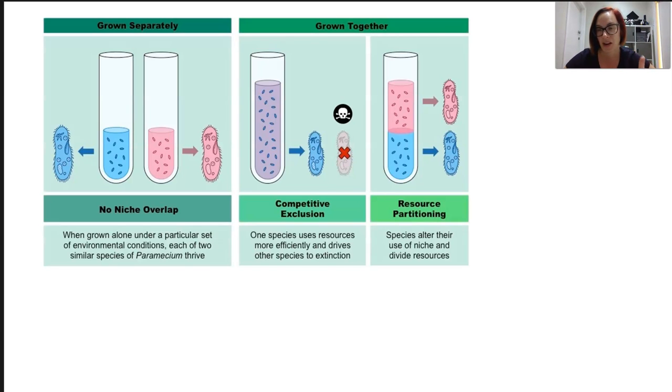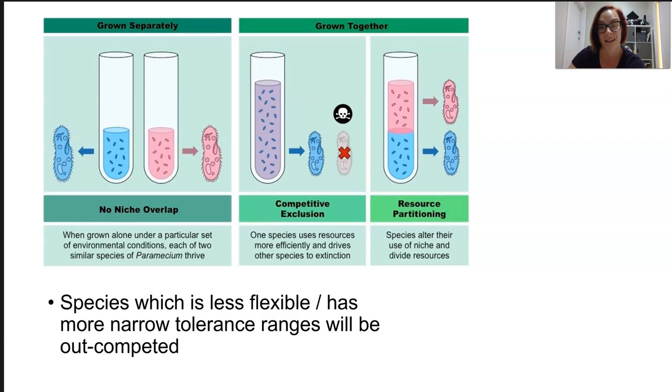Now one species of paramecium, they were able to use the resources more effectively and therefore reproduce quicker. In any ecosystem, the species with the more narrow tolerance range is going to be less flexible in terms of its physiological capabilities to survive. So in a slightly different environment, it will be out-competed. So essentially we're talking survival of the fittest here, but in terms of fit, fit means adaptable and flexible.